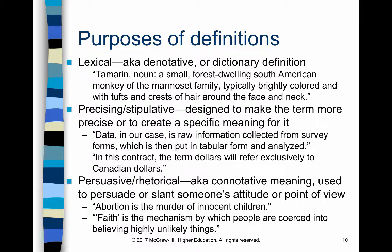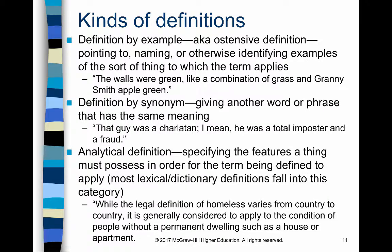People don't generally use rhetorical definitions to clarify — they use them to persuade. You'll see these in political speech, often used to trash the opposition or build up positive emotional appeal for their own viewpoint. While this can be very effective, it's often not particularly ethical. Now we'll look at how we define things — the different kinds of definitions. First, definition by example, also known as ostensive definition. When we use this kind, we might point at the thing we're referring to, as in pointing to the front door and saying 'this is where I want you to install the camera.'